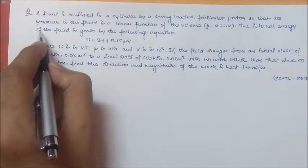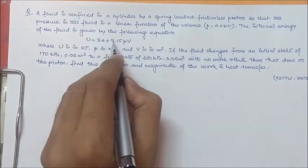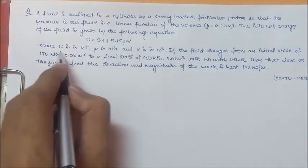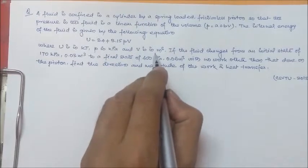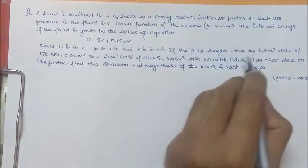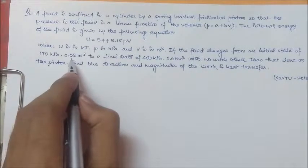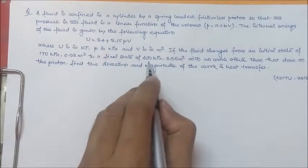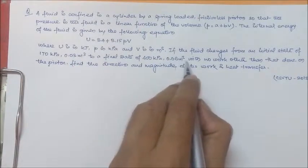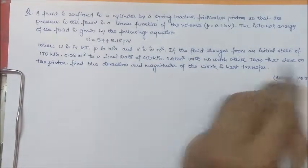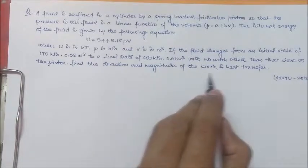a linear function of volume, that is P equal to A plus BV. The internal energy of the fluid is given by the following equation: U equal to 34 plus 3.15 PV, where U is in kJ, P is in kPa and V is in m³. If the fluid changes from an initial state of 170 kPa, 0.03 m³ to a final state of 400 kPa, 0.06 m³ with no work other than that done on the piston, find the direction and magnitude of the work and heat transfer.